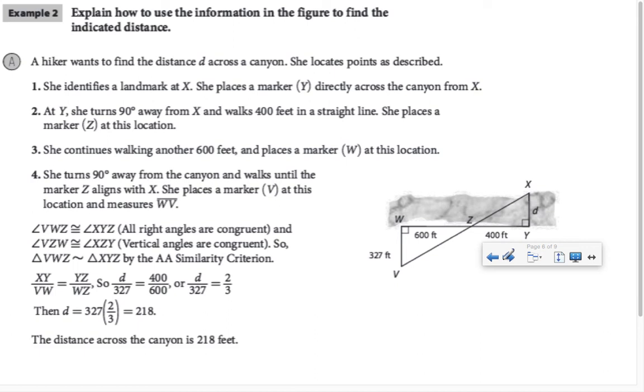We can also use indirect measurements to find, for example, distances across a canyon. Sometimes you may see it expressed as the distance across a lake. So we have a very similar example here where we have these two similar triangles. Notice the proportion that they've set up. And then they cross-multiply to solve. The words are kind of the breakdown of how she laid out the measurements. But what you need to make sure that you're able to figure out is, first of all, why these triangles are similar and how you can use them to set up and solve a proportion.